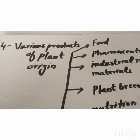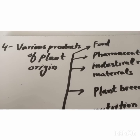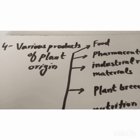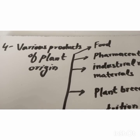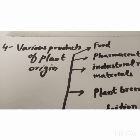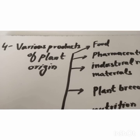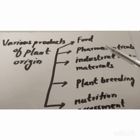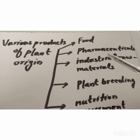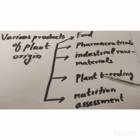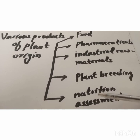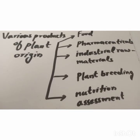Number four: Metabolomics is extensively used in various products of plant origin such as food, pharmaceuticals, industrial raw materials, plant breeding, and nutrition assessment.